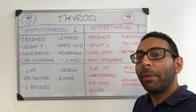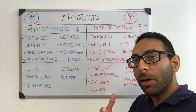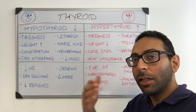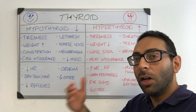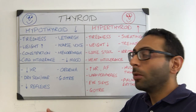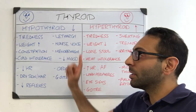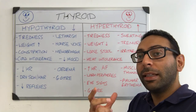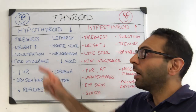So you see a patient and you think they may have either hypothyroid or hyperthyroid — underactive thyroid or overactive thyroid. What are the symptoms and signs that you may be thinking about in these conditions?